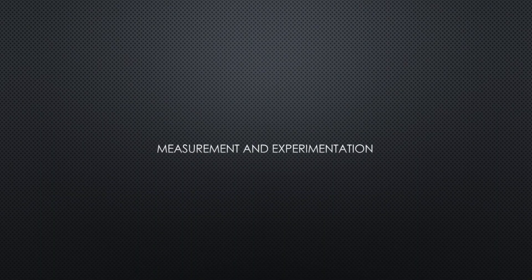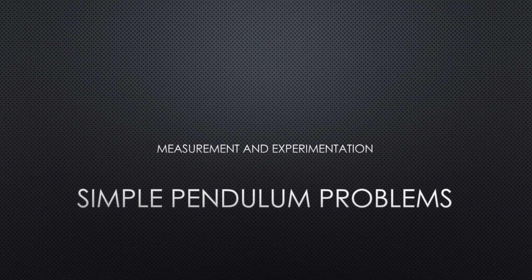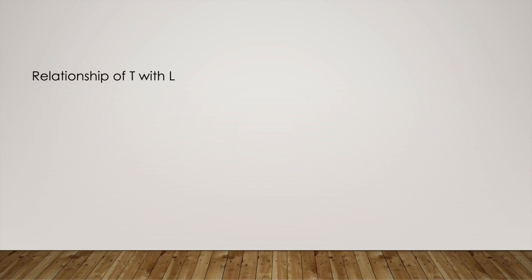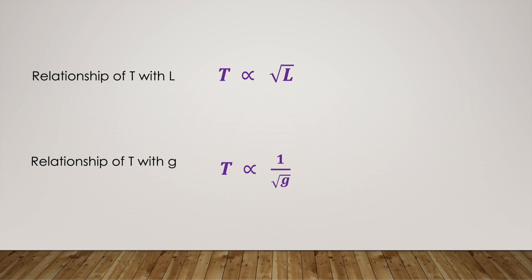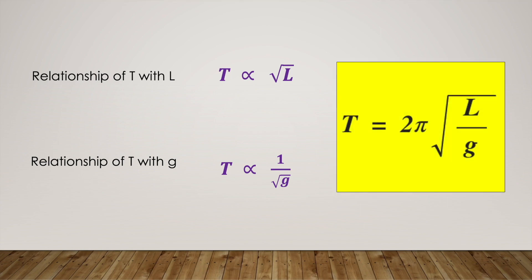In this video, we will learn how to solve simple numerical problems of the simple pendulum. In the last video, we stated that the relationship of the time period with effective length was that T is proportional to the square root of L. The relationship of time period with the acceleration due to gravity was that T is inversely proportional to G. Combining these two relationships, we get the equation T equals 2π√(L/g).